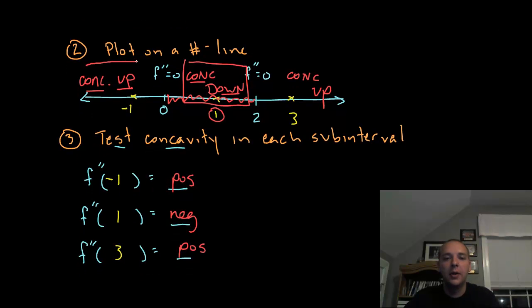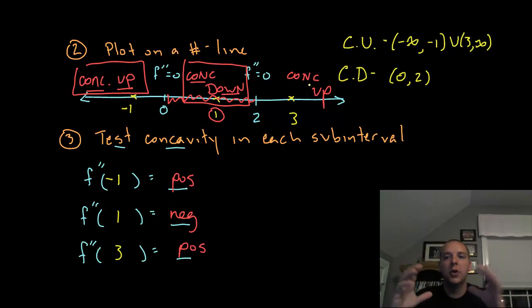We have a concave up interval, and you would probably want to write your final answer like this. Concave up: from negative infinity to zero, union (that means joined with) three to infinity. Those are the two intervals that are concave up. Concave down would be from zero to two. We leave these intervals open - you don't put closed brackets, it will be open intervals where it's concave up or down.